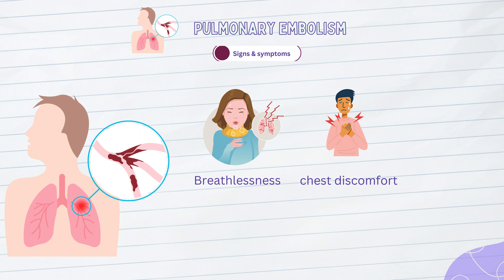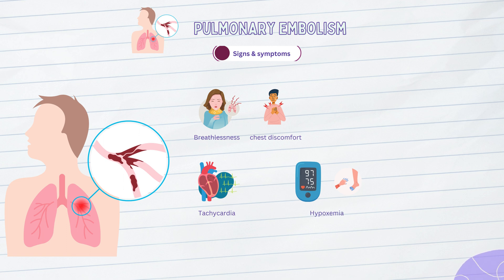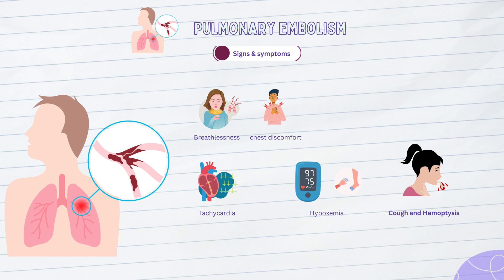While dyspnea and chest pain are key symptoms, pulmonary embolism can present with a variety of other clinical features. Tachycardia, or rapid heartbeat, is a common finding in patients with PE. The body's response to decreased oxygenation and increased strain on the heart leads to an elevated heart rate. Pulmonary embolism also impairs oxygen exchange in the lungs, leading to decreased oxygen saturation levels in the blood — hypoxemia — which can be detected using pulse oximetry. Some patients may also develop a cough, which can be dry or associated with blood-tinged sputum, known as hemoptysis, due to irritation of the lung tissues or small pulmonary infarctions.